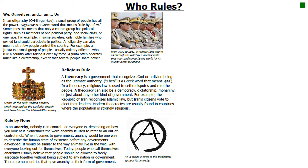In an anarchy, nobody is in control — or everyone is, depending on how you look at it. Sometimes the word anarchy is used to refer to an out-of-control mob. When it comes to government, anarchy could describe the human state of existence before any governments developed, similar to the way animals live in the wild with everyone looking out for themselves. Today, people who call themselves anarchists usually believe that people should be allowed to freely associate together without being subject to any nation or government. There are no countries that have anarchy as their form of government — a government is a requirement for a country to be a country.